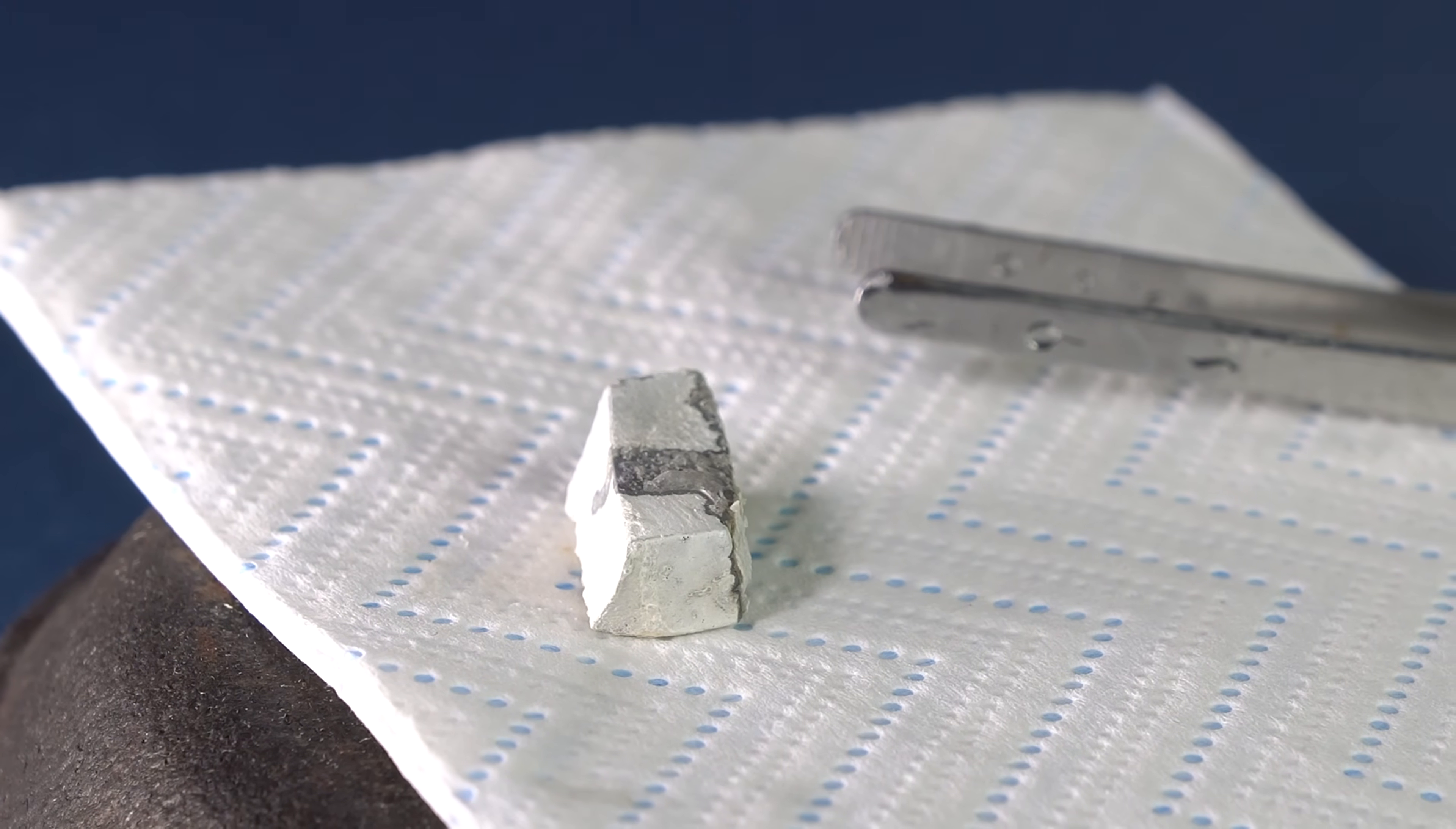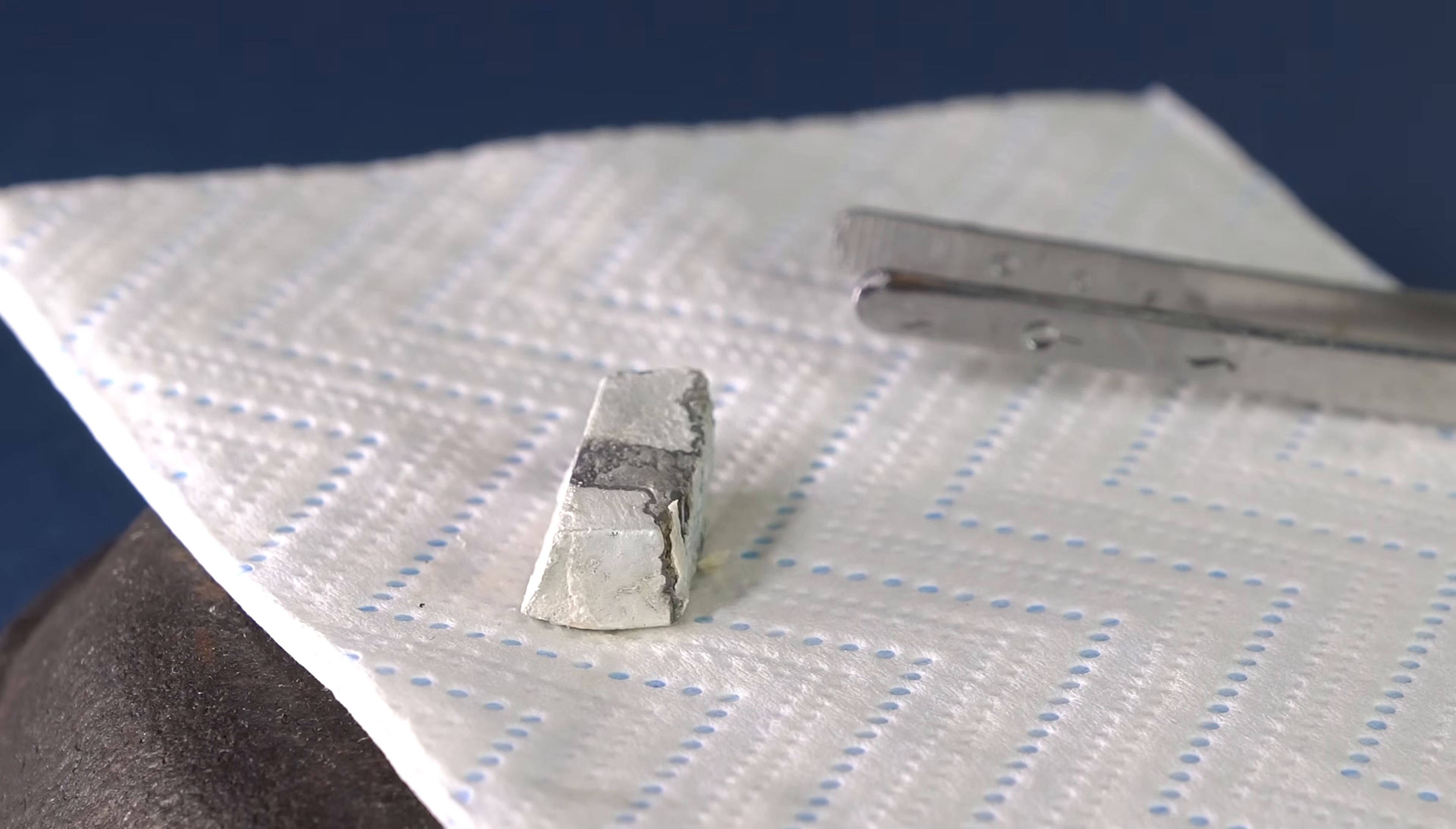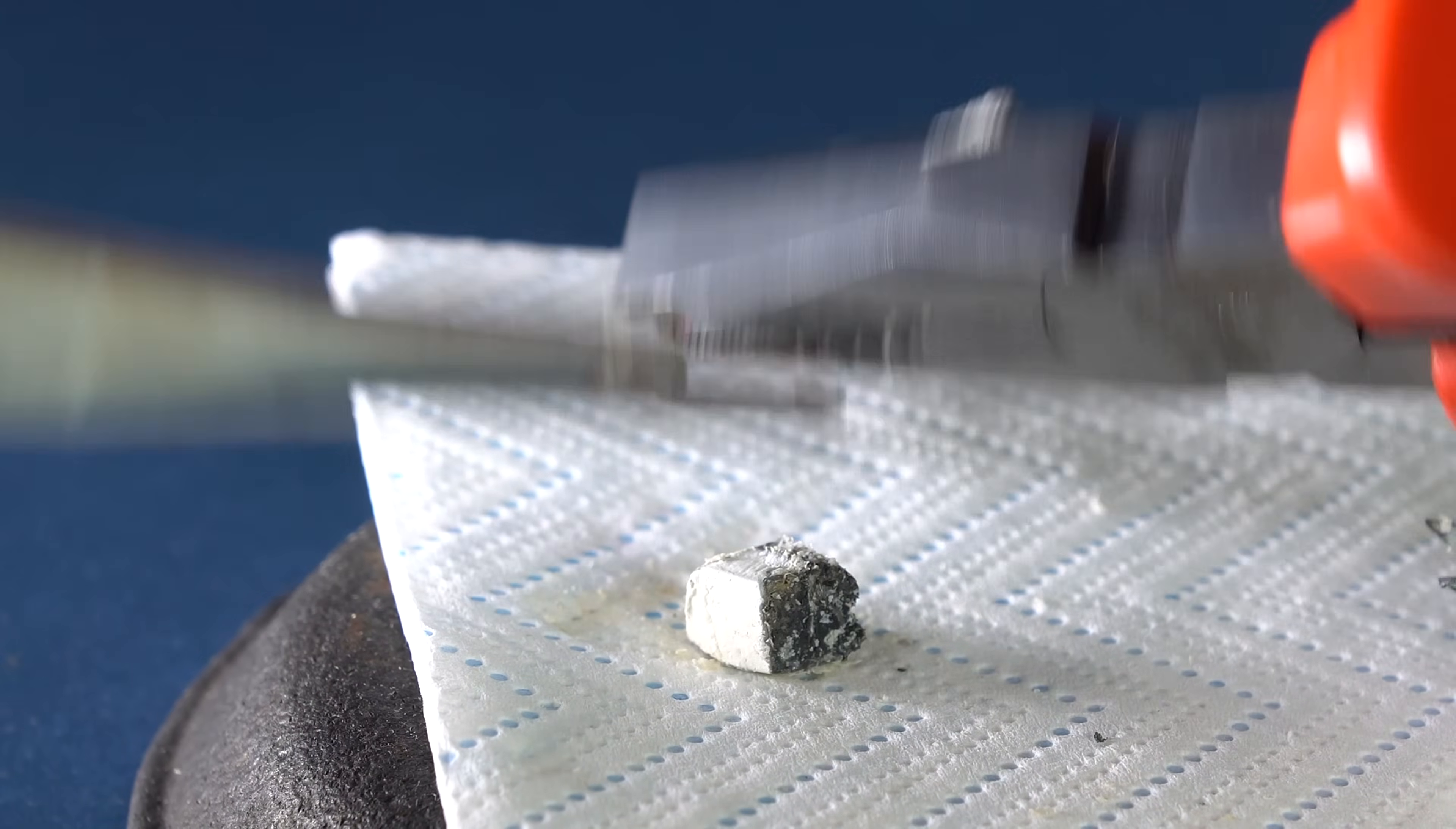Externally, barium looks like a gray metal due to the oxide layer covering it. The hardness of barium resembles lead. You can cut a piece of barium with a pair of pliers.